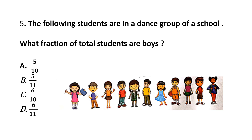First, let's count how many total students there are: 1, 2, 3, 4, 5, 6, 7, 8, 9, 10, 11. There are 11 students in total. And how many of them are boys? 1, 2, 3, 4, 5. There are 5 boys out of 11 students. So, the fraction of boys out of total students is 5 by 11. Answer is option B.